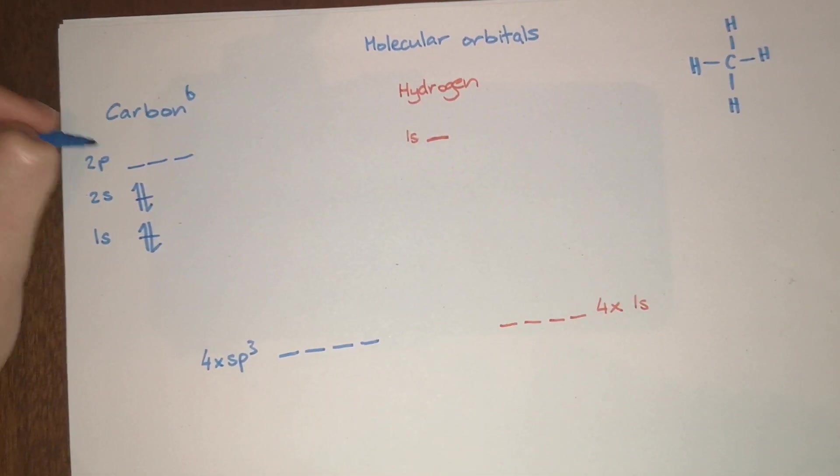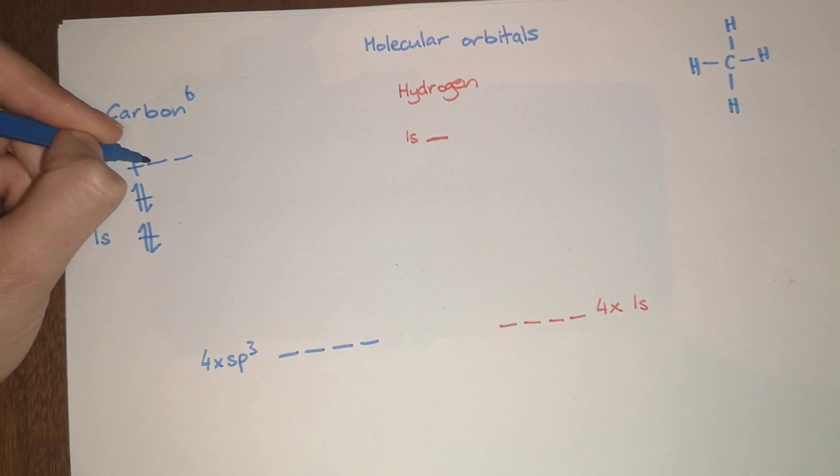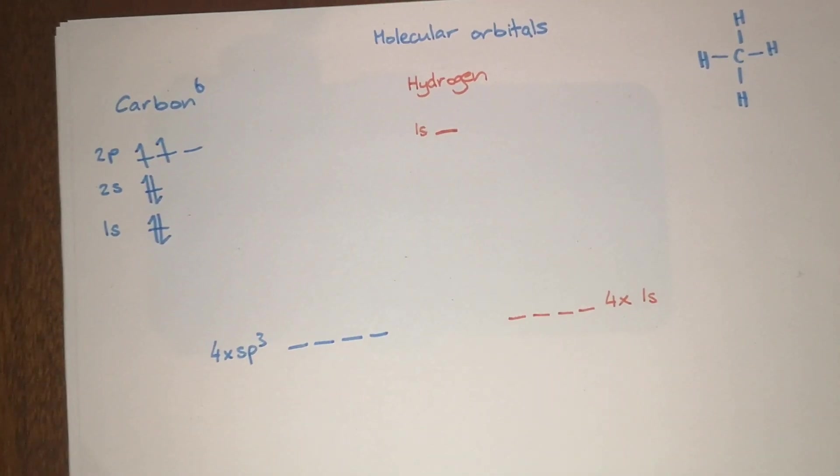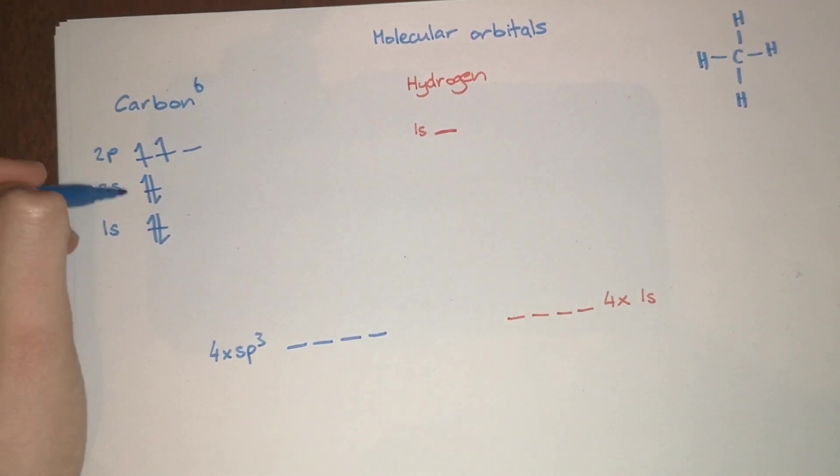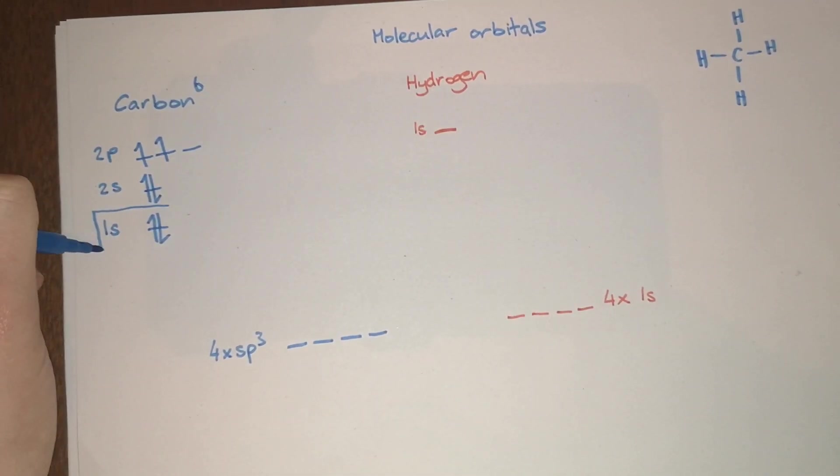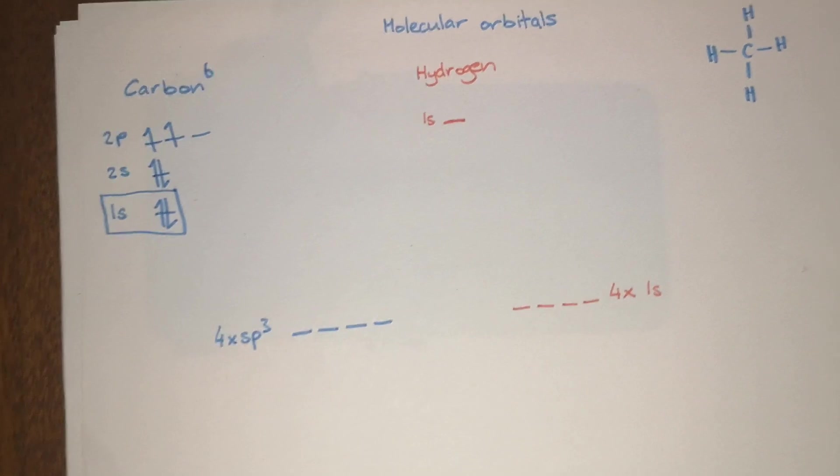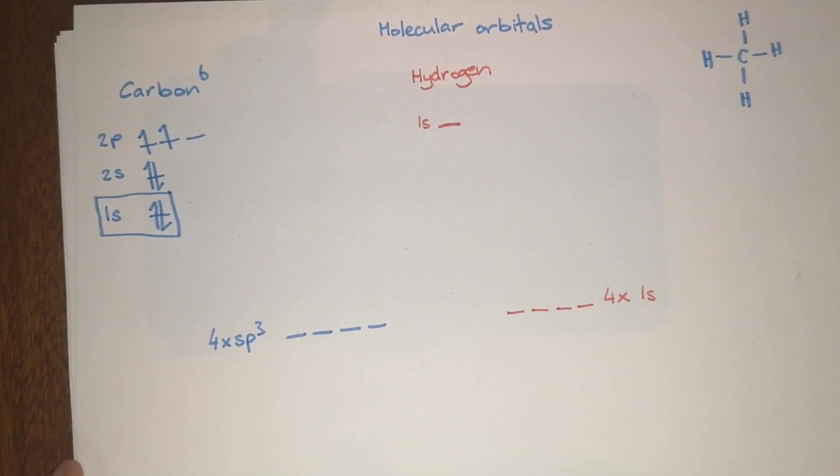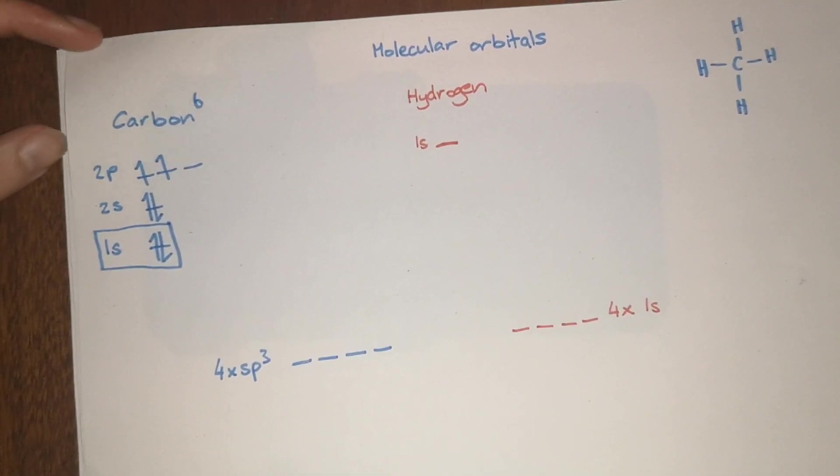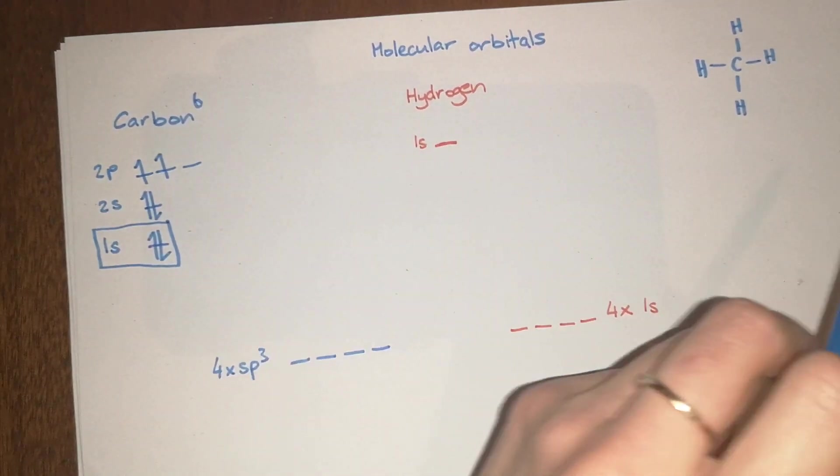The first two will go into the 1s orbital, the next two will go into the 2s orbital, and then you have two electrons left and they will fill two of the p orbitals singly because electrons don't like to be in pairs unless they have to be. Because this is the inner shell, this doesn't interact at all when it comes to hybridization.